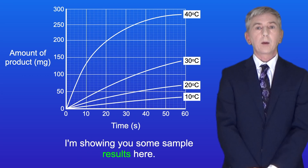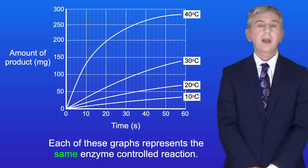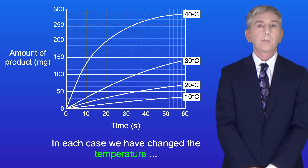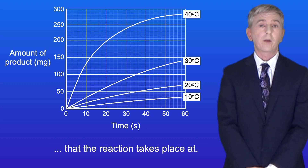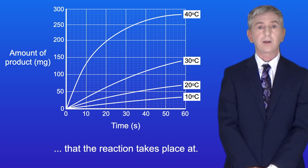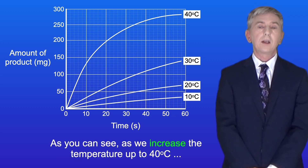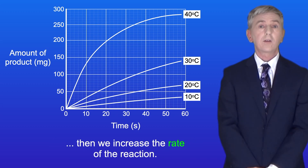I'm showing you some sample results here. Each of these graphs represents the same enzyme controlled reaction, but in each case we've changed the temperature that the reaction takes place at. As you can see, as we increase the temperature up to 40 degrees Celsius, we increase the rate of the reaction.